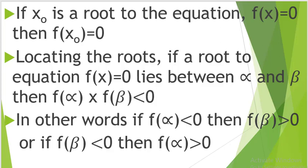In other words, if f(alpha) is less than 0, that is negative, then f(beta) must be greater than 0, that is positive. Such that when you multiply a negative value times a positive value, the answer must be negative. That's why we claim that the product of f(alpha) times f(beta) is less than 0. Or, if f(beta) is less than 0, then f(alpha) must be greater than 0, such that the product of the two gives a negative value.